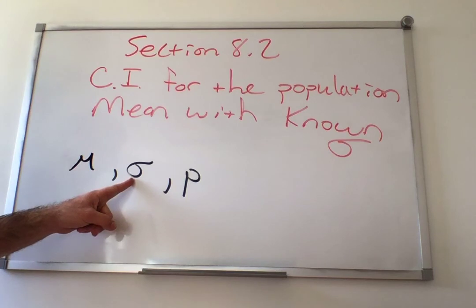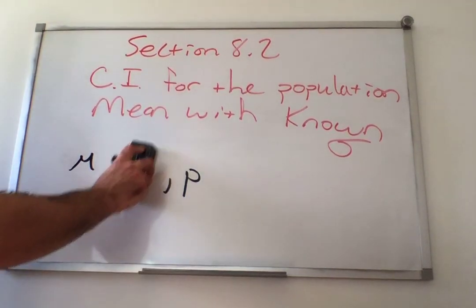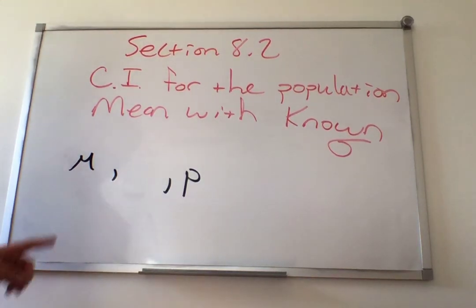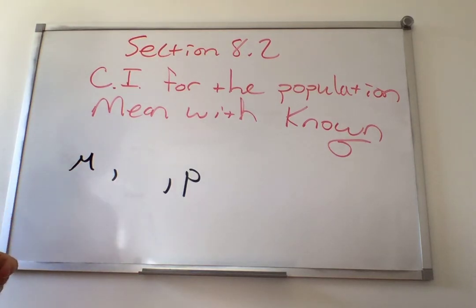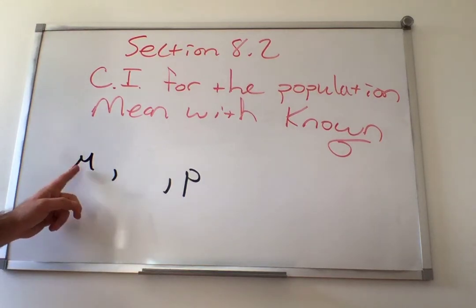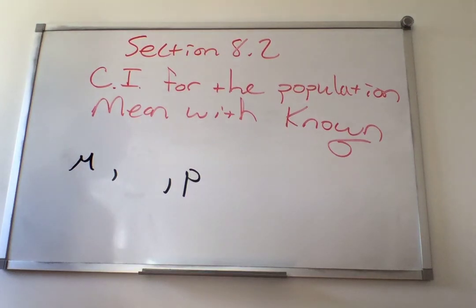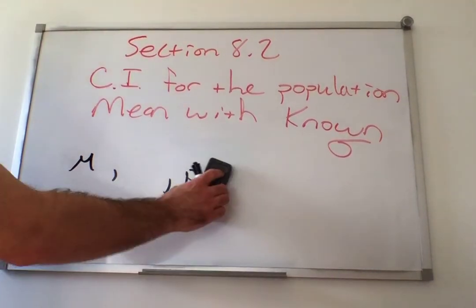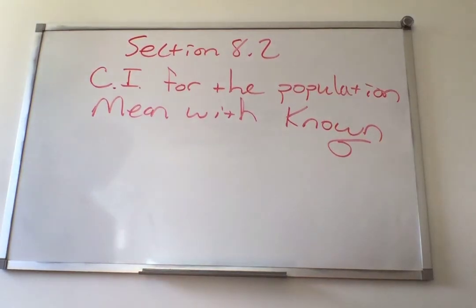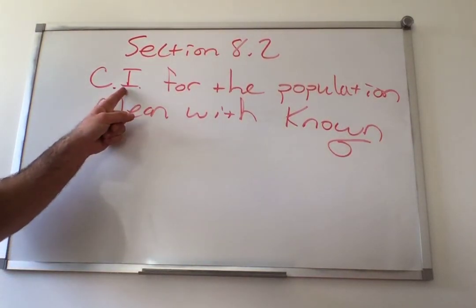We're not going to deal with confidence intervals for the standard deviation until chapter 11. What we talk about in chapter 8 are how to make confidence intervals for the population mean if we don't know what it is. For example, if I wanted to know the average age of CLC students, I don't know what the population average is — that's what I would be estimating. Also, I may not know the proportion of students who are full-time versus part-time, so I could use a confidence interval to estimate that proportion. So in 8.2 and 8.3, we talk about constructing confidence intervals for the mean.